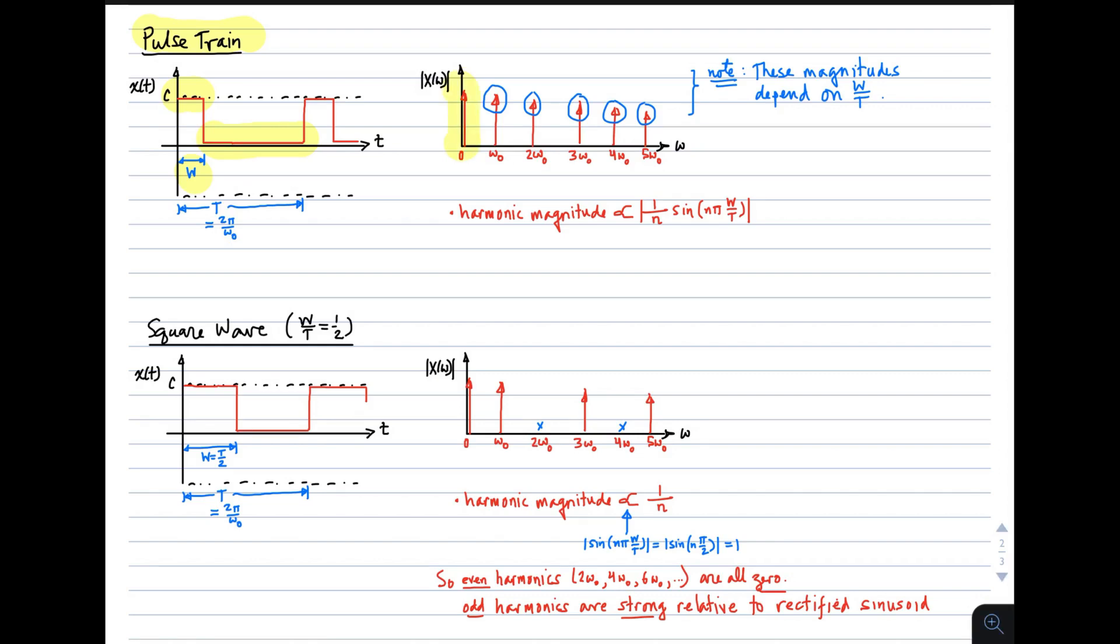For such a waveform, we get all the harmonics, including the fundamental and DC. But two things to note here. Harmonic magnitude rolls off relatively slowly, but it depends on the duty cycle. So we see that the harmonic magnitude falls off as 1/n, whereas it was falling off as 1/n² for the rectified sinusoids. But we also see it depends on the duty cycle. So the harmonic magnitude rolls off faster or slower, depending on what the duty cycle is.